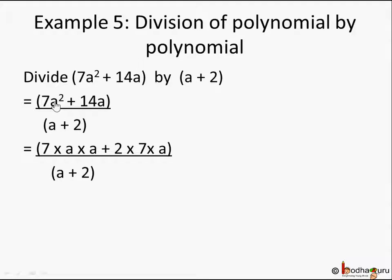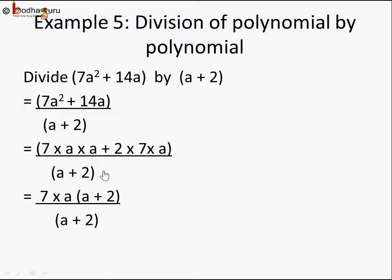You can write it as 7 times a times a plus 14. Prime factors are 2 times 7 times a, divided by a + 2. Try to find out what is common here to simplify it. You will find 7 and a are common between these two terms.